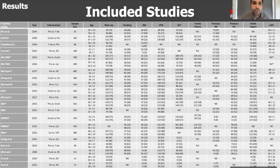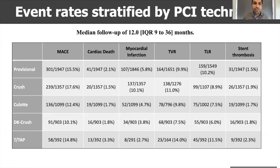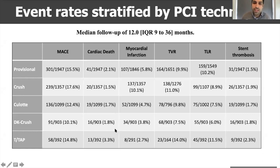The list of included studies shows that the mean age of the population was 64 years old, 22% of patients had diabetes, and the most used technique in this meta-analysis was provisional stenting in 34% of cases. When looking at event rates stratified by PCI technique at a mean follow-up of 12 months, MACE rates ranged approximately from 10 to 15%, cardiac death from 1.8 to 3.3%, and myocardial infarction from 2.7% to 10.1%. Most of this variability arises from different endpoint definitions across the individual randomized clinical studies.